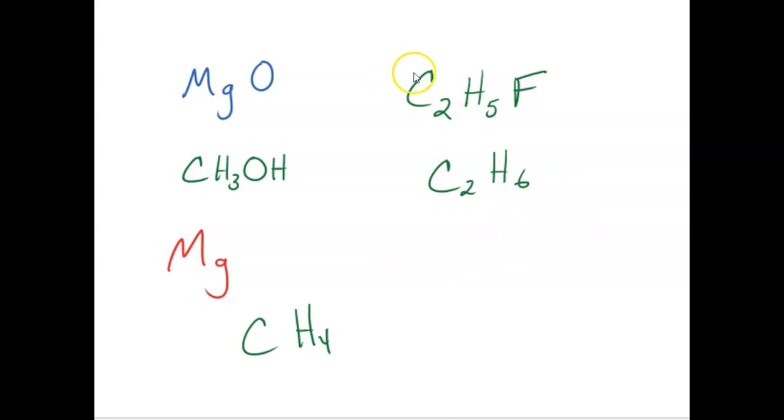Well, if you look at all of these compounds, these green ones are covalently bonded. The red one is a metal and the blue one is ionic. And the ionic compound is definitely going to be the hardest to melt of all of these compounds.